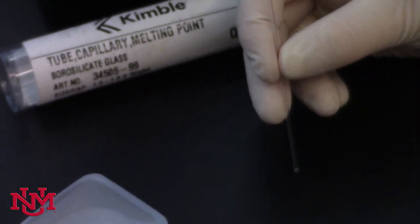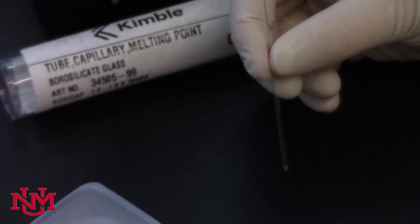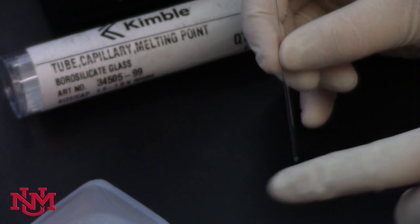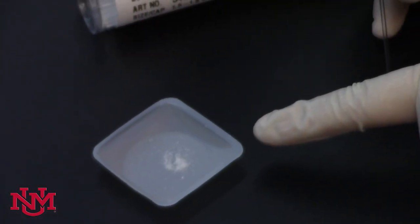The first thing to do to start taking the melting point is make sure you have the tube in your sample. You don't need a whole lot of your sample. It should be a nice dry solid.